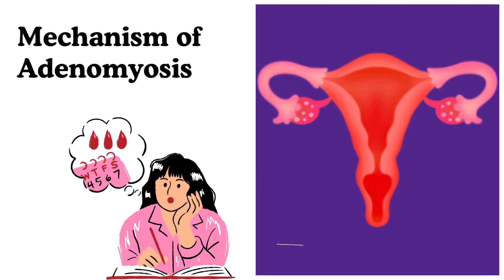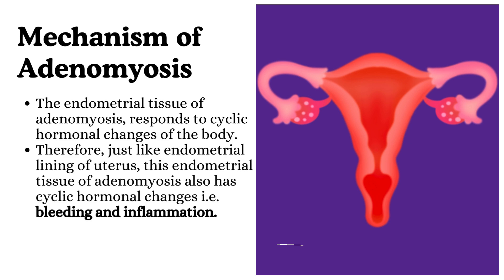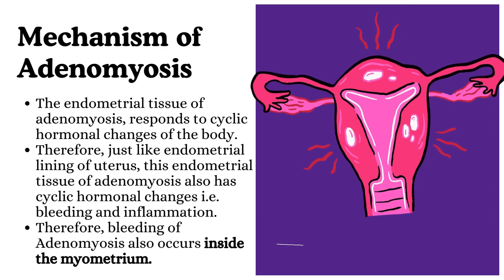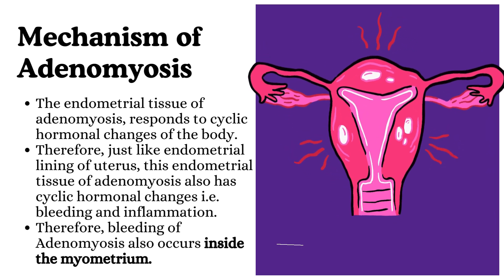Mechanism of adenomyosis: the endometrial tissue of adenomyosis responds to cyclic hormonal changes of the body. Therefore, just like the endometrial lining of the uterus, this endometrial tissue of adenomyosis also has cyclic hormonal changes — that is, bleeding and inflammation. Therefore, bleeding of adenomyosis also occurs inside the myometrium.